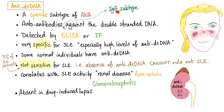Anti-double-stranded DNA is a specific subtype of ANA because the DNA is in the nucleus. They are IgG antibodies against the double-stranded DNA, detected by ELISA or immunofluorescence. They are very specific for lupus, but they are not sensitive.